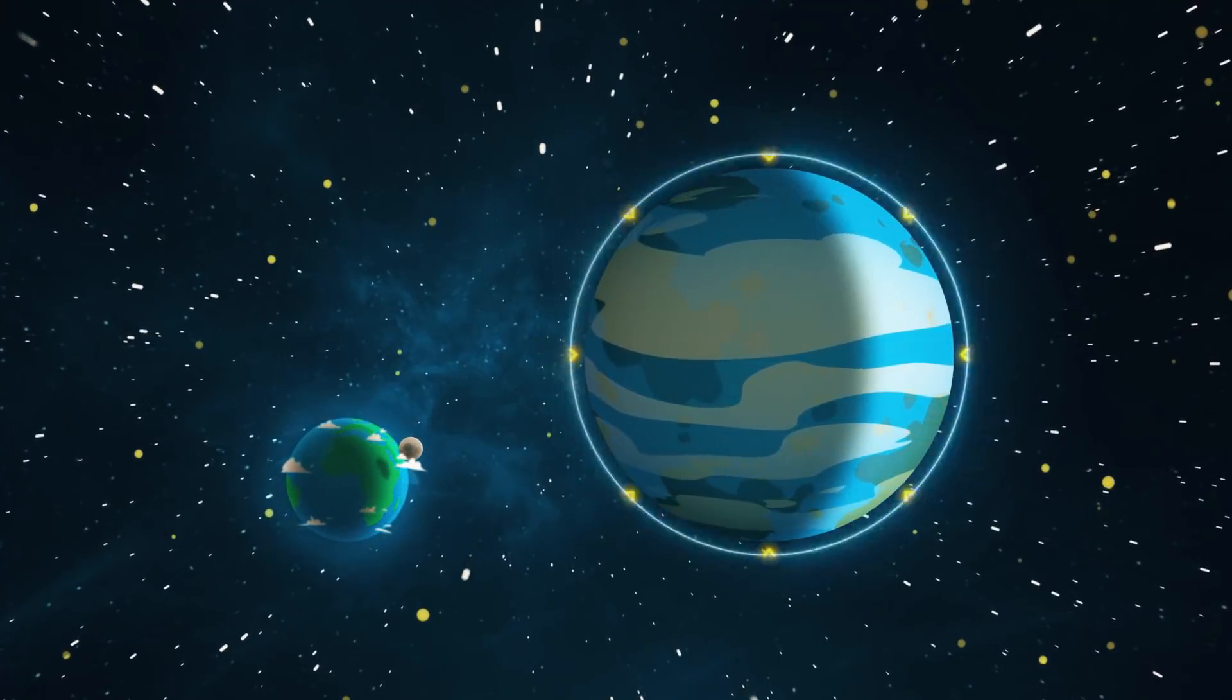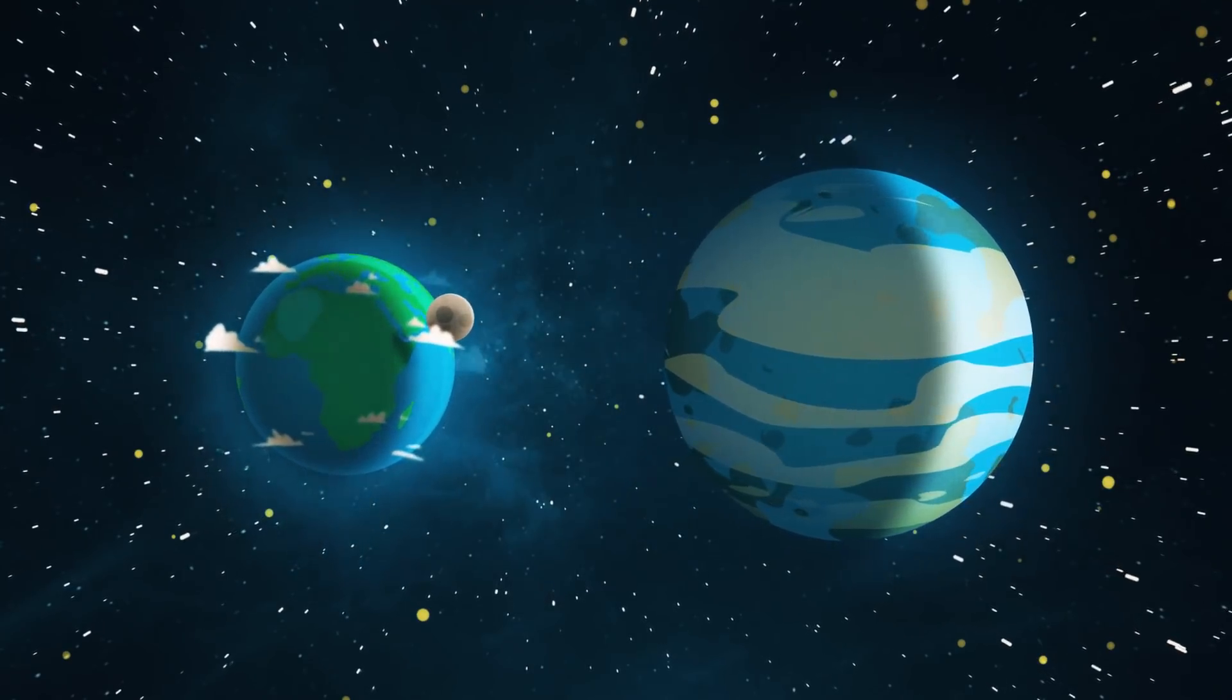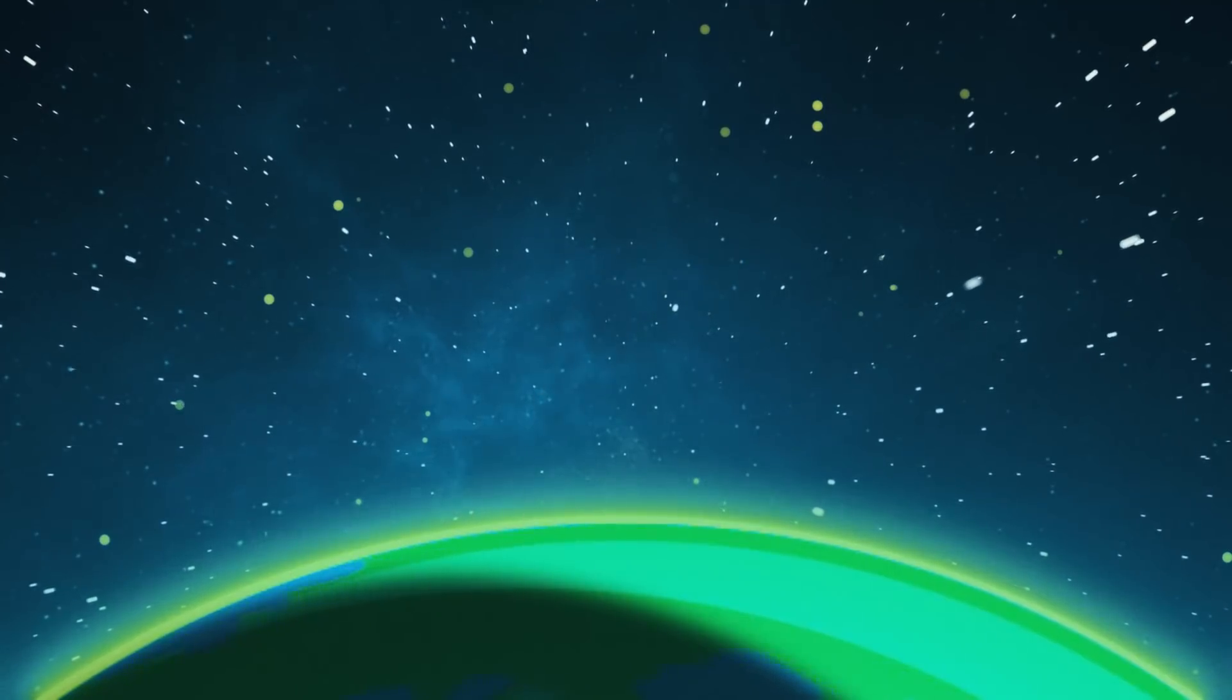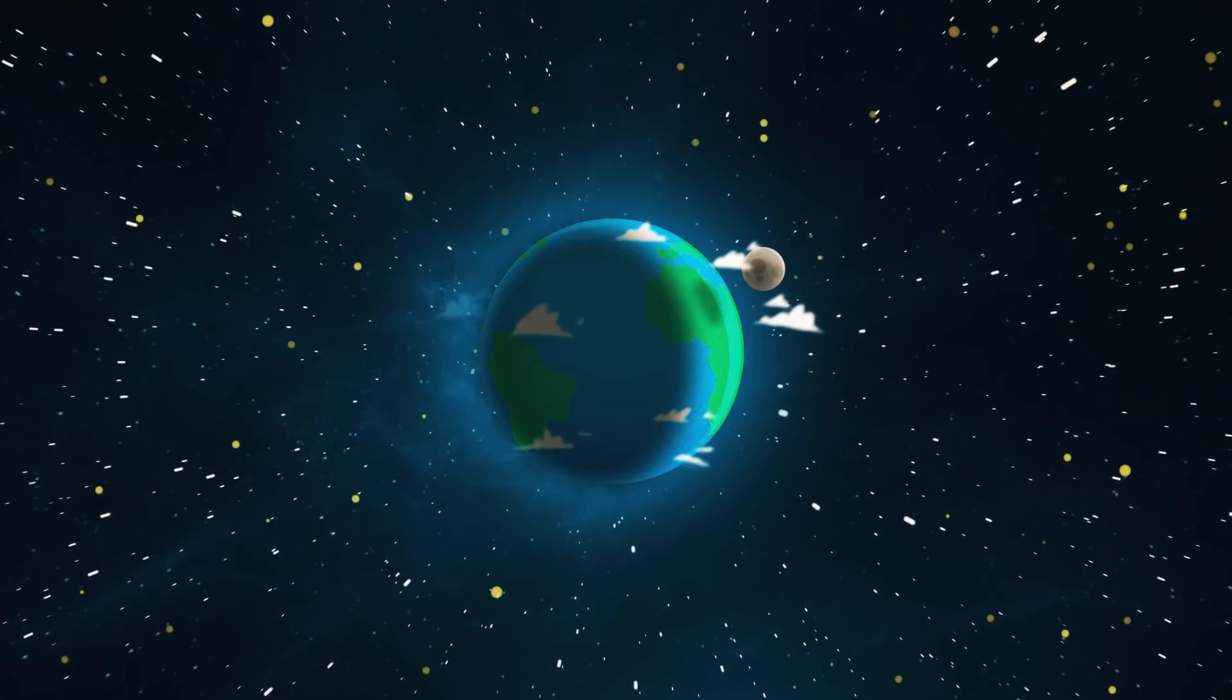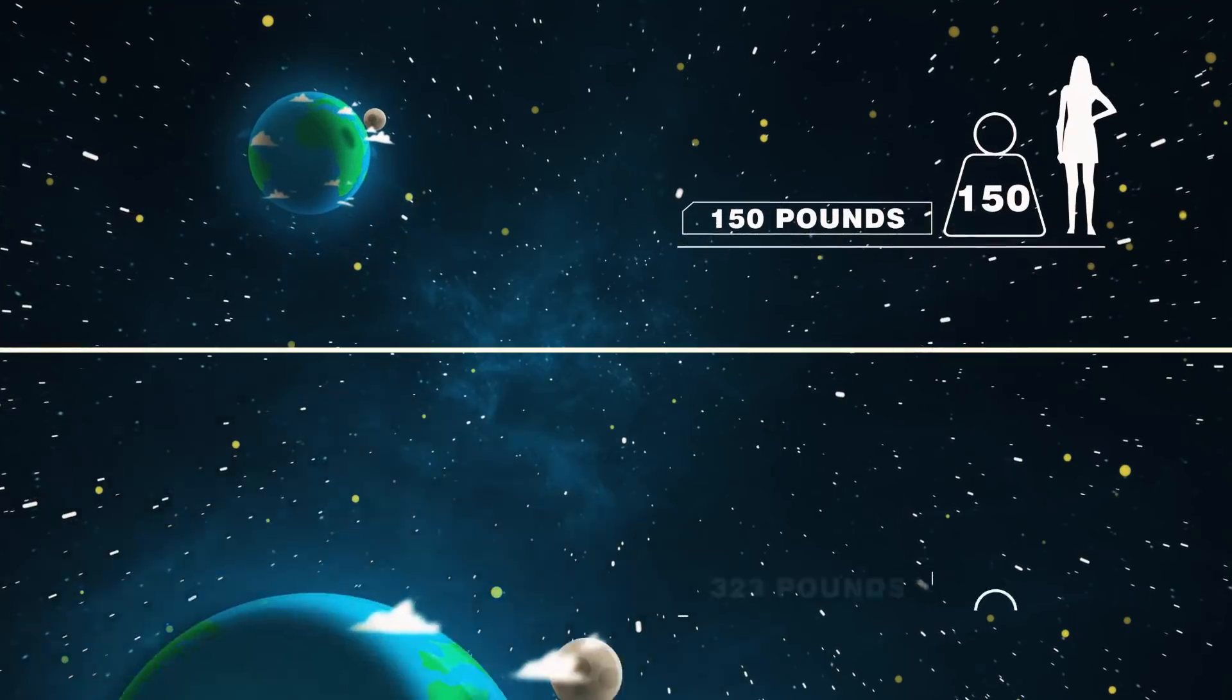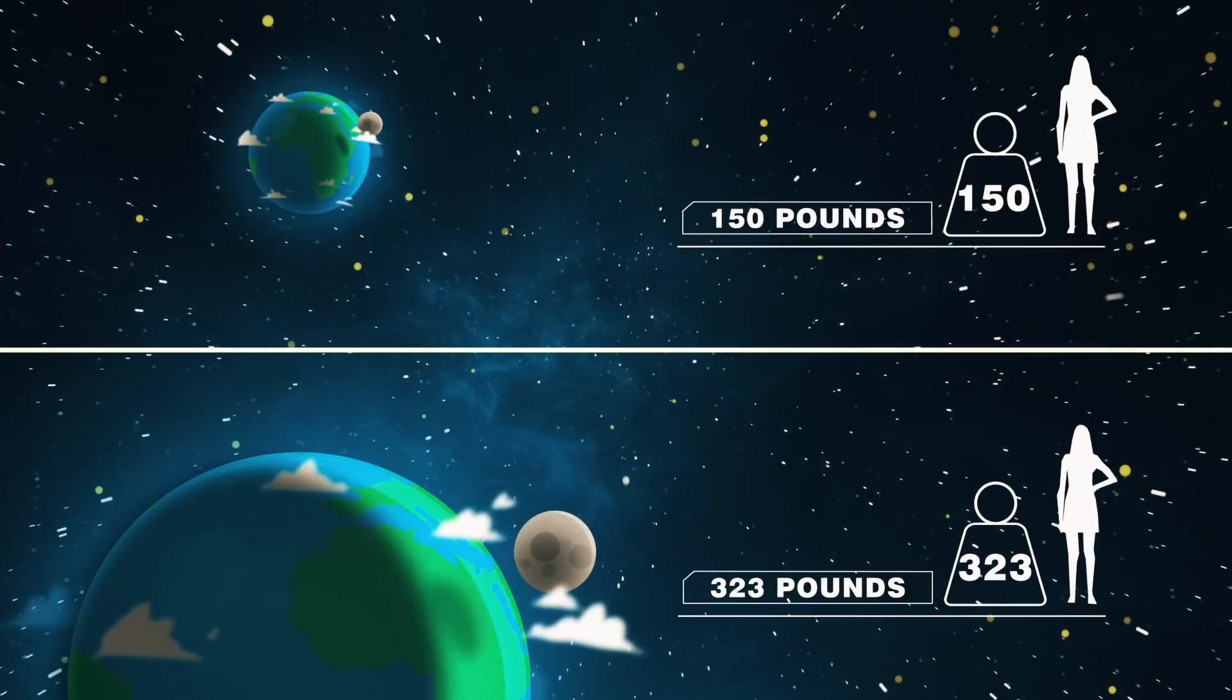Larger planets create a greater gravitational force. So if the Earth grew ten times more massive, you would immediately notice a change in surface gravity. We won't dive too deep into the math, but if you weighed 150 pounds on Earth, you would weigh about 323 pounds on a planet ten times as massive.